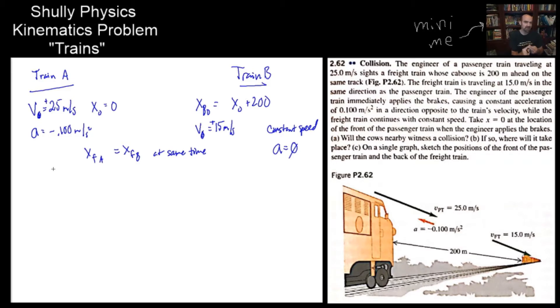Will the cow see a collision? So what we're looking for here, our target, is X final for A equal to the X final for B at the same time. So we're dealing with accelerations, times here. Time isn't given, but it is mentioning time, so we should take that into consideration. What is helpful is our final position equals initial position plus initial velocity times time plus half AT squared. That has all the quantities involved in this problem. And we're going to use that for both train A and B.